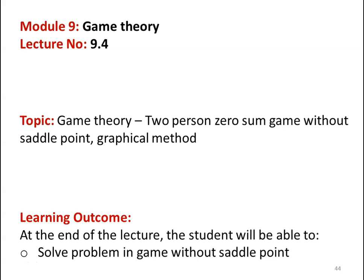The topic for this lecture in Game Theory is the 2×n zero-sum game without saddle point, and we are going to solve that model using the graphical method. The learning outcome: at the end of the lecture, the student will be able to solve problems in a game without saddle point using the graphical method.